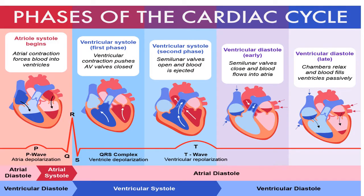These are the phases of the cardiac cycle. The first phase is called the atrial systole — remember, systole means contraction — so it means contraction of the atria, which is the plural of atrium. The atria contract and force blood into the ventricles. You can see from the arrows that blood from the atria on top is forced down into the ventricles.